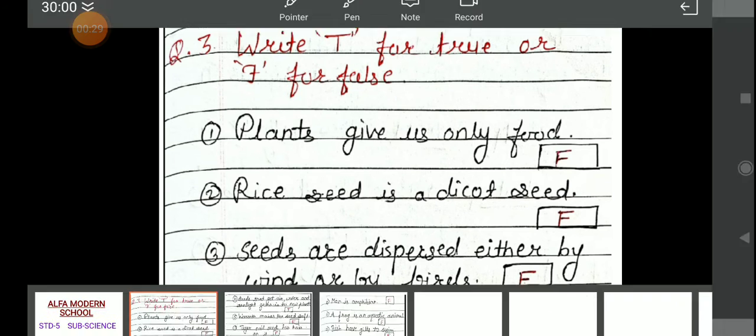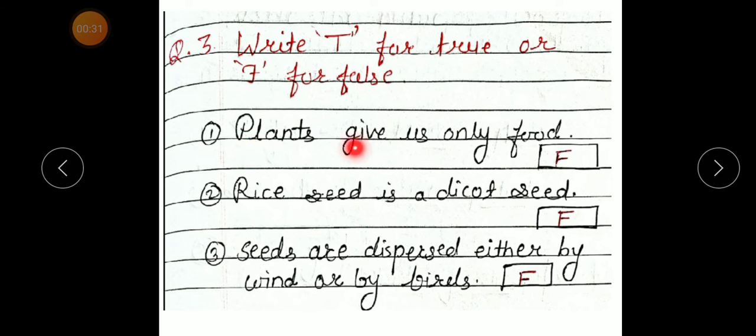Number 1. Plants give us only food. True or false? False. Number 2. Rice seed is a dicot seed. True or false? False.